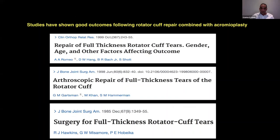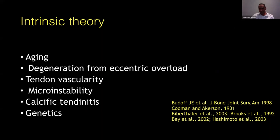Acromioplasty became associated not only with painful shoulder and sub-acromial impingement, but also with treatment of rotator cuff tear — it was automatic to do sub-acromial decompression with every cuff repair. But this extrinsic theory didn't last long. By the late 1990s, people started thinking the problem is actually coming from inside the cuff itself — due to aging, degeneration, extrinsic overload, vascularity of the tendon, micro-instability, genetics, or calcification. They called it the intrinsic theory.